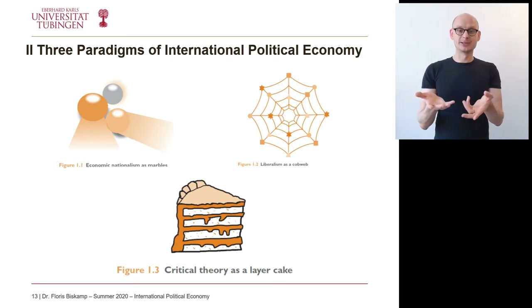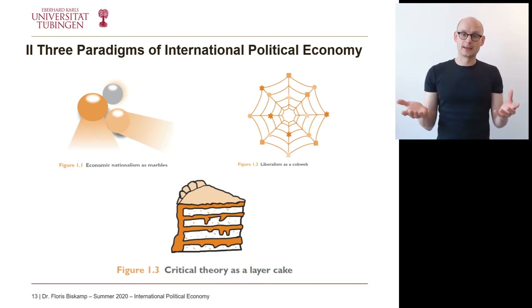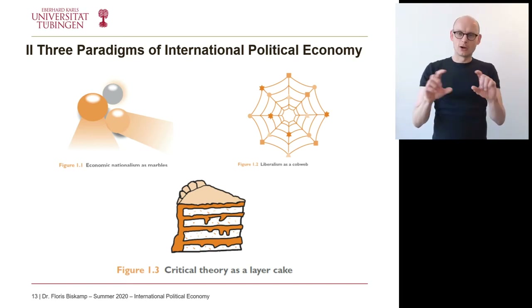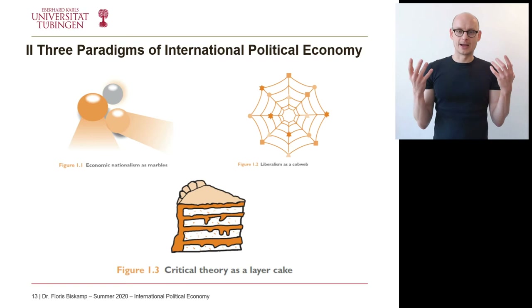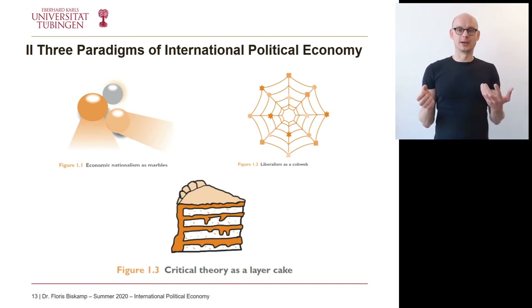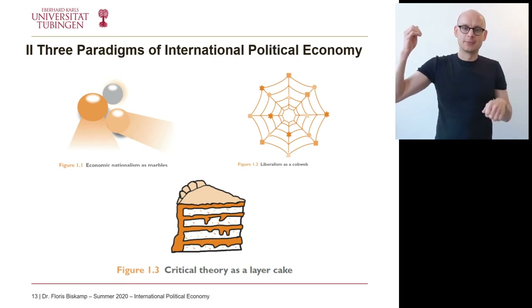Finally, why do critical theorists believe that the international political economy is a layer cake? The layers in the cake here probably represent the classes. If you have a layer cake and you cut across it, all pieces will also be layered in the same way. Similarly, critical theorists argue that all countries have societies that are marked by class distinction. Let's say we have four people: a CEO at the French automobile manufacturer PSA, a CEO at the Japanese automobile manufacturer Toyota, a manufacturing worker at Peugeot which is part of PSA, and a manufacturing worker at Toyota.